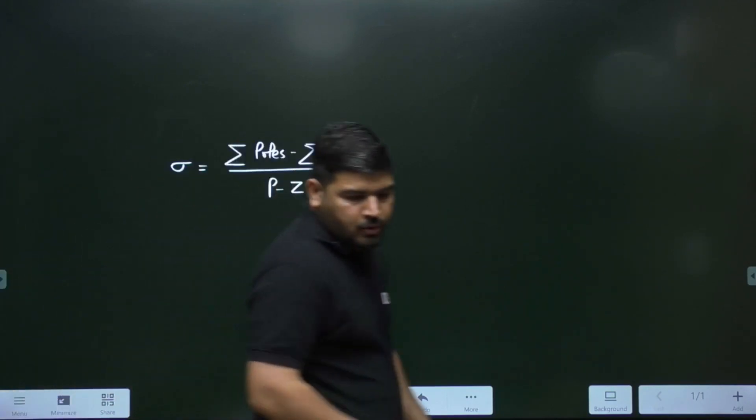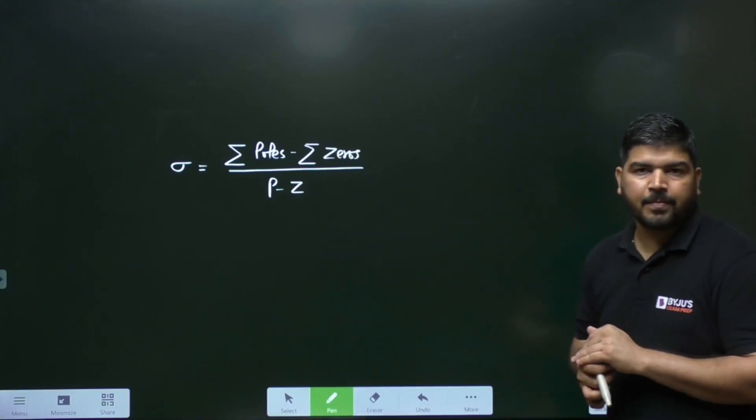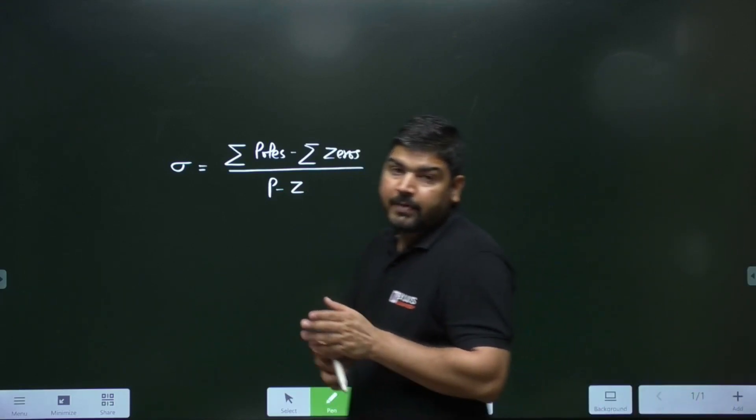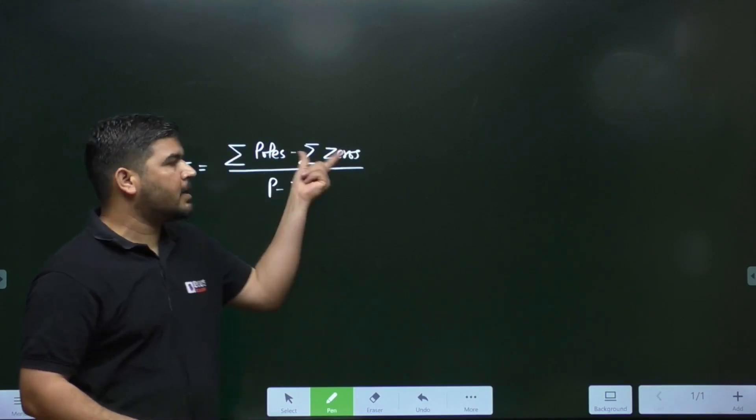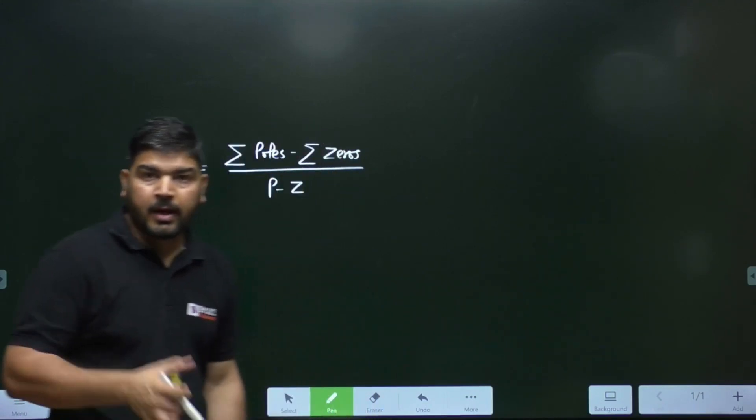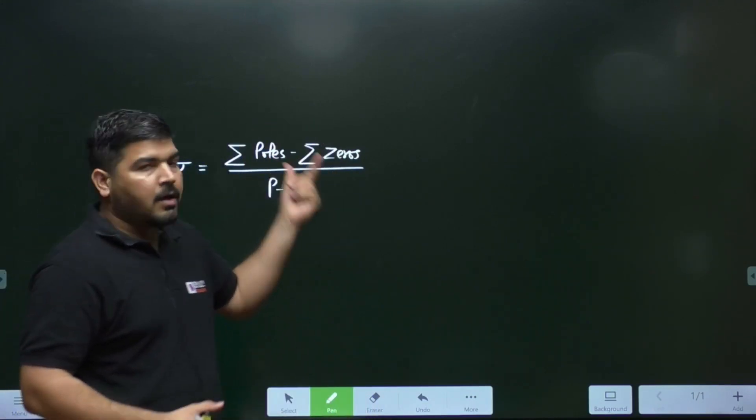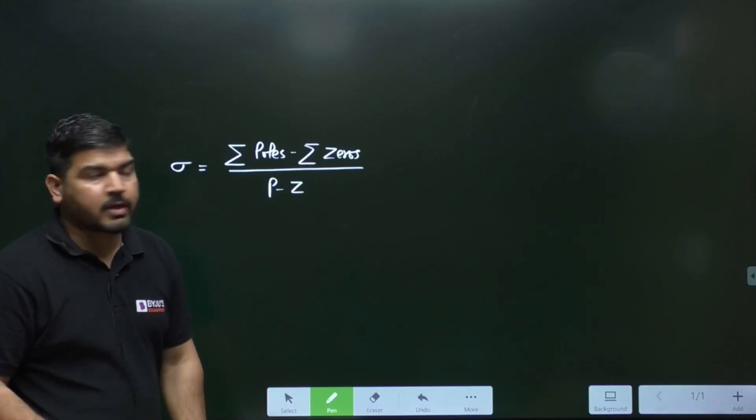This is the formula that we use to calculate the centroid point, but sometimes it is very difficult to calculate the pole location and the zeros location. Now, how to do that if you do not know the pole location and zeros location?